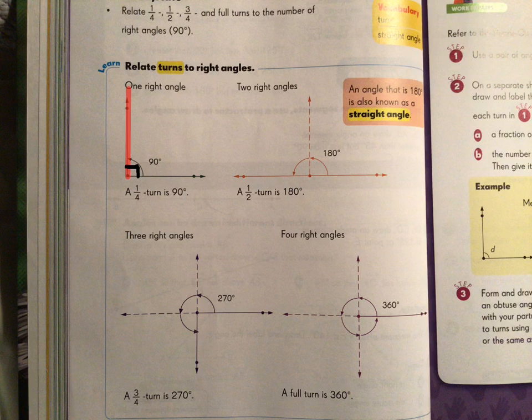So a quarter turn is 90 degrees and we have one right angle made when you do one quarter turn or one-fourth.